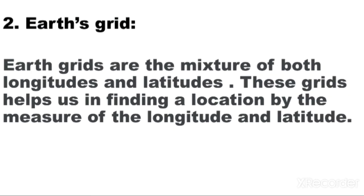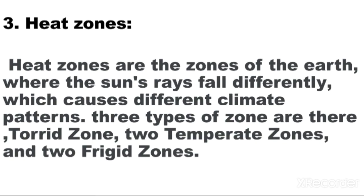Question number 2: Earth's Grid. Earth's grids are the mixture of both longitudes and latitudes. These grids help us in finding a location by the measure of the longitude and latitude. Question number 3: Heat Zones. Heat zones are the zones of the Earth where the sun's rays fall differently, which causes different climate patterns.